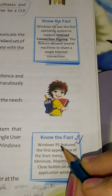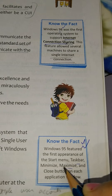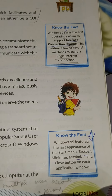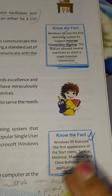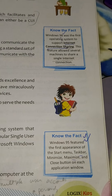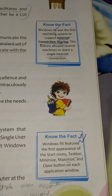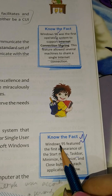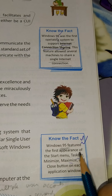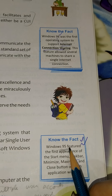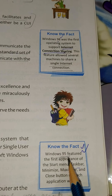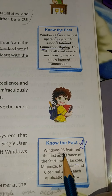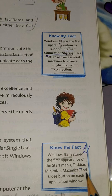Know the fact: Windows 95 featured the first appearance of the start menu and taskbar. Now you can see in your Windows: the start menu is on the left side, the taskbar is at the bottom, and when you open a window, you have minimize, maximize, and close buttons on the top right. These three buttons first appeared in Windows 95. Before that, in Windows 3.1, these were not there.